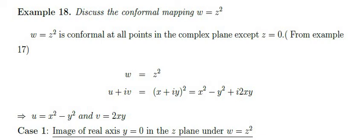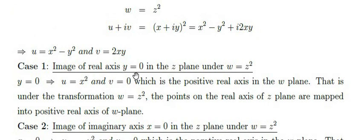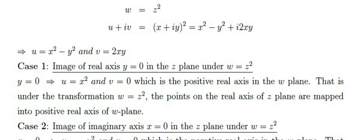Case 1: Image of the real axis y = 0 in the z-plane under w = z². Substituting y = 0, we get u = x² and v = 0. That is, u is a positive value (x²) and the imaginary part v = 0, which is the positive real axis in the w-plane. So points on the real axis of the z-plane are mapped to the positive real axis of the w-plane.